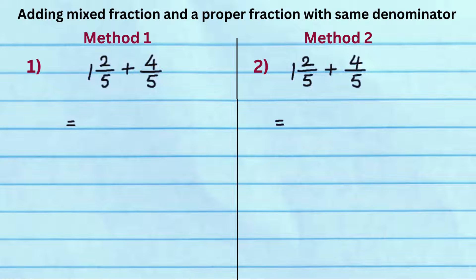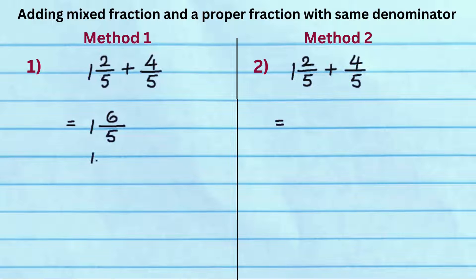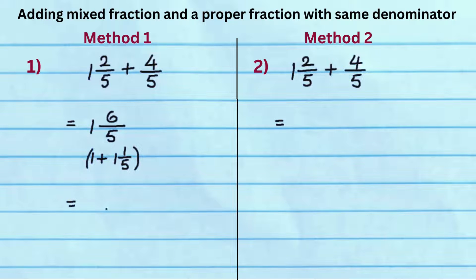Let's look at another example. Write the whole number 1, common denominator 5, and add the numerators 2 and 4 to get 6. Since 6 by 5 is an improper fraction, simplify it to get 1 and 1 fifths. Add 1 and 1 fifths to 1 to get the answer 2 and 1 fifths.